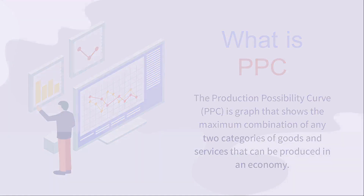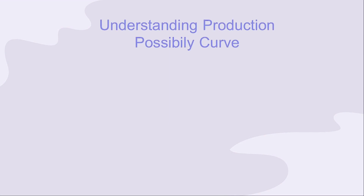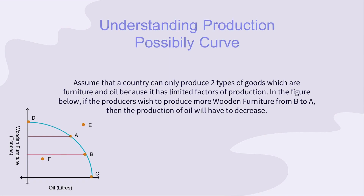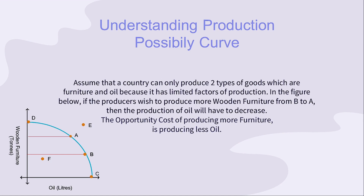Now, let's look in detail with an example. Let's assume that a country can only produce two types of goods — Wooden Furniture and Oil — because it has limited factors of production. In the figure below, if the producers wish to produce more wooden furniture from B to A, then the production of oil will have to decrease. The opportunity cost of producing more furniture is producing less oil.